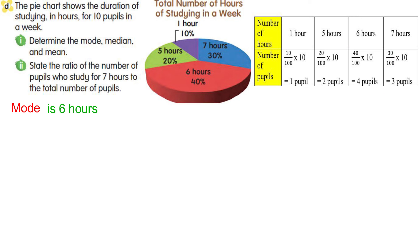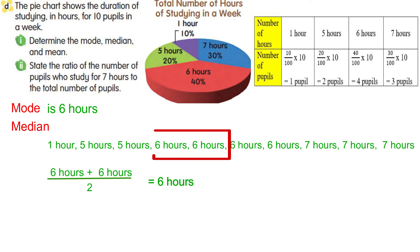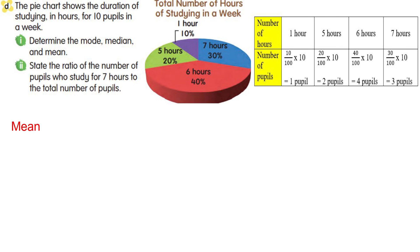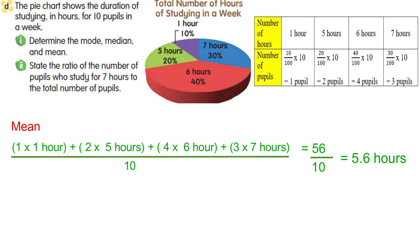Now find the median. Arrange the data in ascending order — the median will be 6. For the mean, find the total number of hours, that is 56, divided by 10 pupils. The mean will be 5.6.